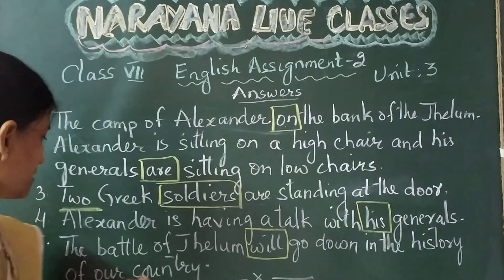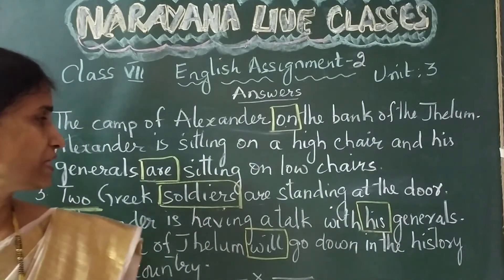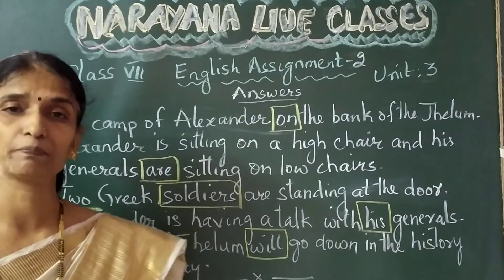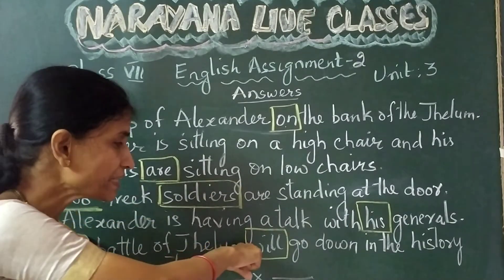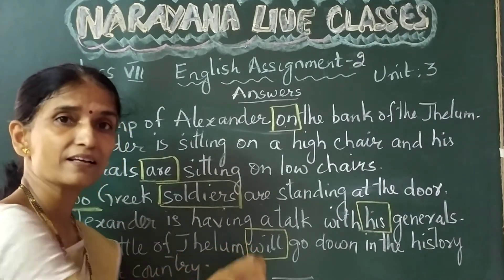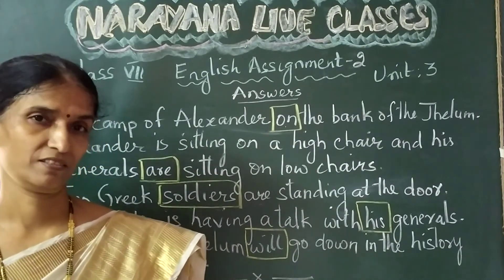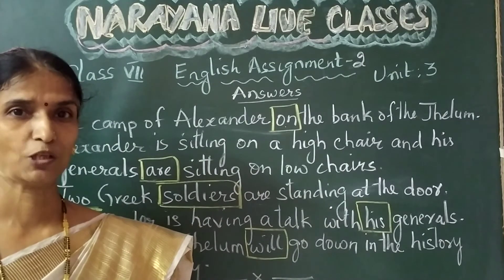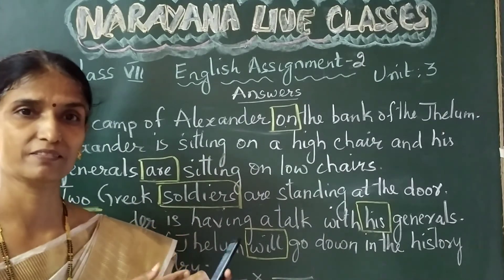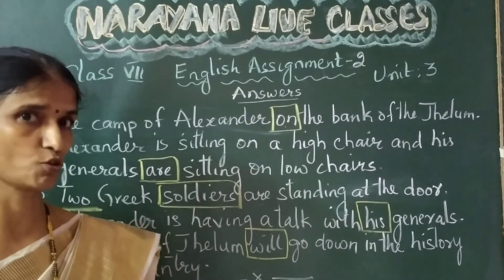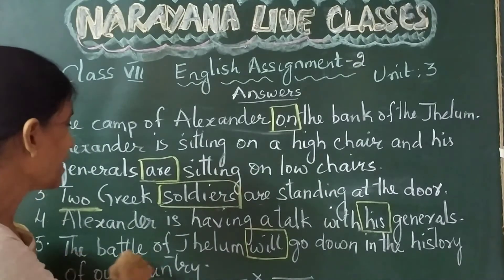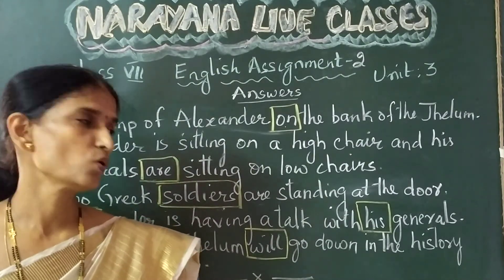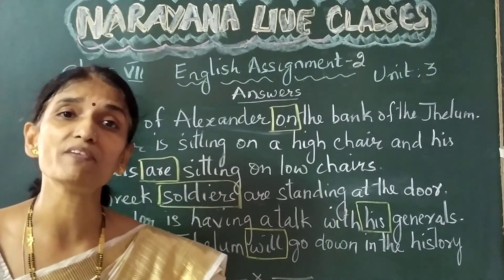Now the last sentence: 'The battle of Jailam would go down in the history of our country.' The mistake is 'would' — we change it to 'will.' 'Will' is the present form and 'would' is the past form. The corrected sentence is: 'The battle of Jailam will go down in the history of our country.'